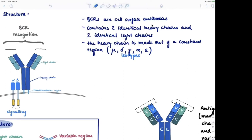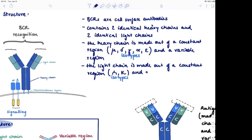And then we have a variable region. And also the light chain is made out of a constant region. And here we have two isotypes, that's Lambda and Kappa, and then we have a variable region.